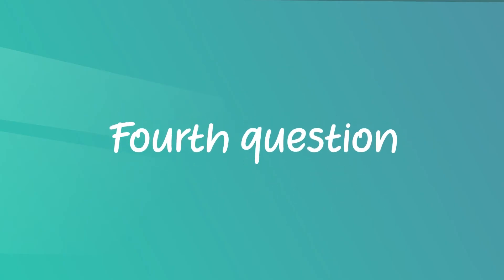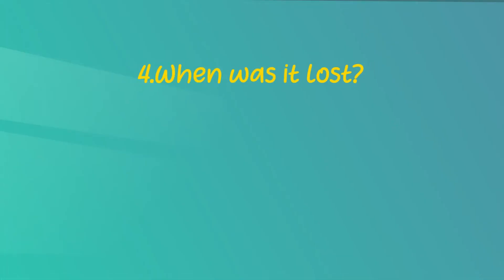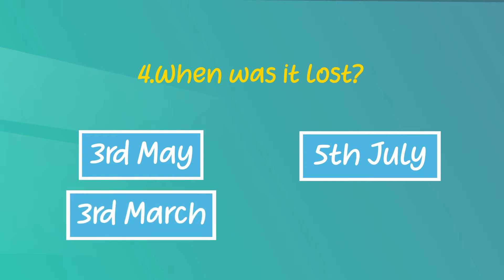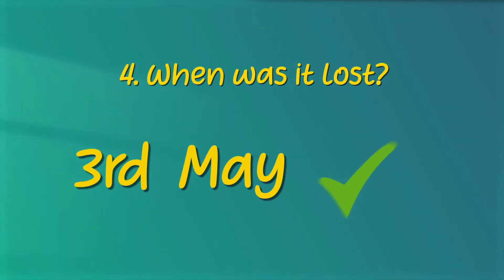Fourth question: when was it lost? You have four dates as options: 3rd May, 5th July, 3rd March, 5th May. Refer to the notice once again. Yes, the dog was lost on 3rd May.